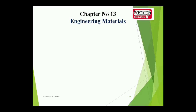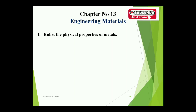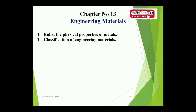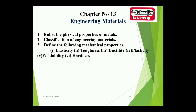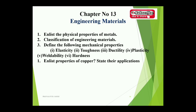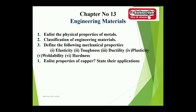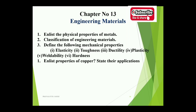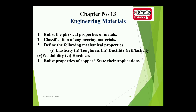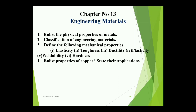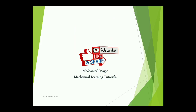Chapter thirteen, the last chapter, covers engineering materials. Topics: enlist the physical properties of metals. Classification of engineering materials. Define mechanical properties like elasticity, toughness, ductility, plasticity, weldability, and hardness. Enlist properties of copper and state their applications. These theories are based on experience and may not appear exactly in examinations. Most of these theories can be found on my channel, Mechanical Magic Mechanical Learning Tutorials. If you like it, please subscribe and share. Thank you very much.